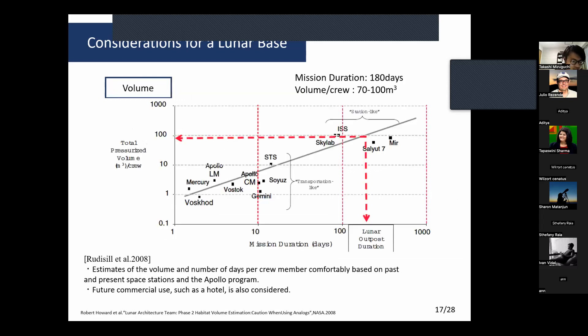This is the recommended length of stay and space volume. Mission duration is 180 days, and volume per crew is 70 to 100 cubic meters. This is an estimate of volume and number of days per crew member comfortably based on past and present space stations and Apollo programs. Future commercial use, such as hotels, is also considered.